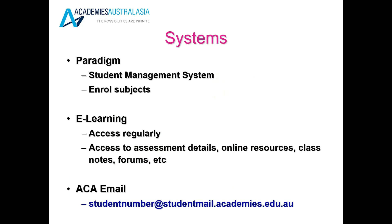When you are a student at Academies Australasia you will have access to Paradigm and e-learning through your Academies Australasia email. Your email is made up of your student number at studentmail.academies.edu.au. With this email you'll be able to access Paradigm, which has all of your information, and e-learning, which has all of the information for your class, assessments and online courses. Please keep this email address somewhere you can remember it because you will use it every day.